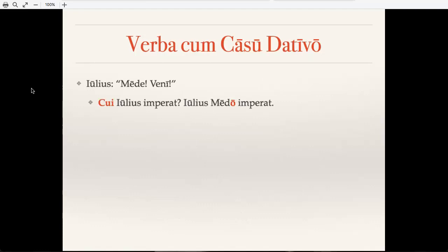Iulius, 'Mede veni.' Cui Iulius imperat? Iulius Medo imperat. Notice there Iulius Medo imperat, not Medum, because we need Medos to go into the dative. And also cui here, that's the dative of quis, who. So cui Iulius imperat, he gives orders to whom? Iulius Medo imperat. Medus paret, et venit.